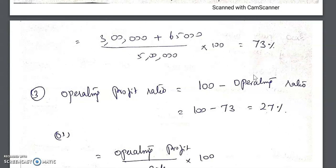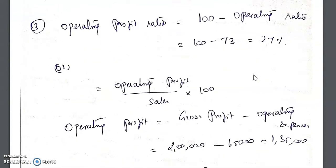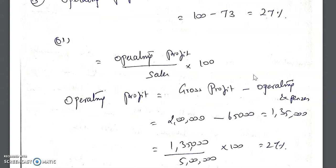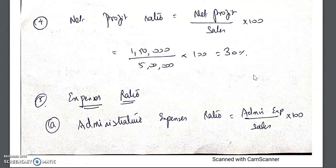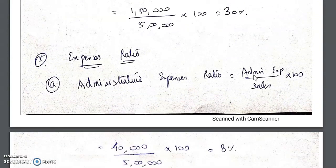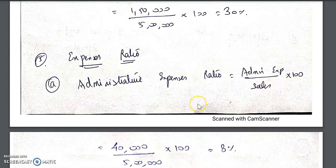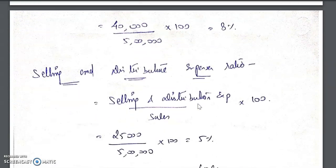Net profit ratio: net profit is given in the sum as 1,50,000, divided by sales 5,00,000 into 100 = 30 percent. For expense ratio, we have two types: administrative expenses and selling and distribution expenses. We benchmark these against sales. Administrative expense divided by sales into 100 = 8 percent. Similarly, selling and distribution expenses divided by sales into 100 gives that ratio.